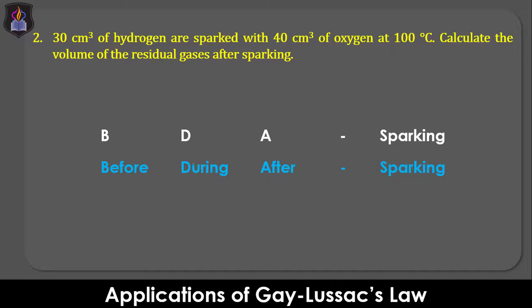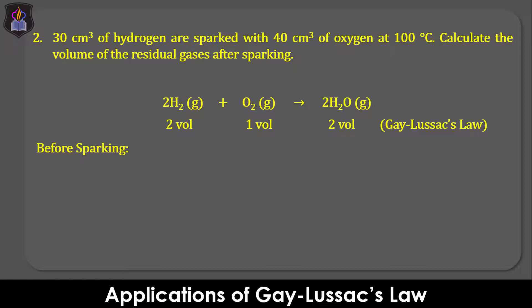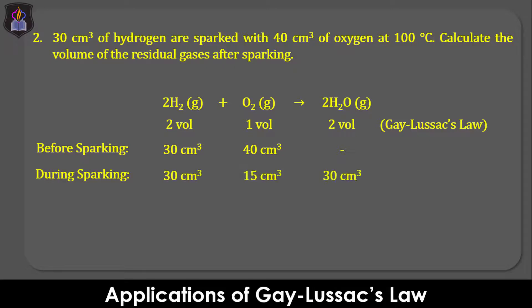First, we write the equation for the reaction between hydrogen and oxygen to form steam, taking the temperature of reaction into consideration. According to Gay-Lussac's law, two volumes of hydrogen will react with one volume of oxygen to form two volumes of steam. From the given parameters, before sparking, we have 30 cm³ of hydrogen and 40 cm³ of oxygen available. During sparking, 30 cm³ of hydrogen will completely react with 15 cm³ of oxygen to produce 30 cm³ of steam, based on the ratio 2 to 1 to 2.